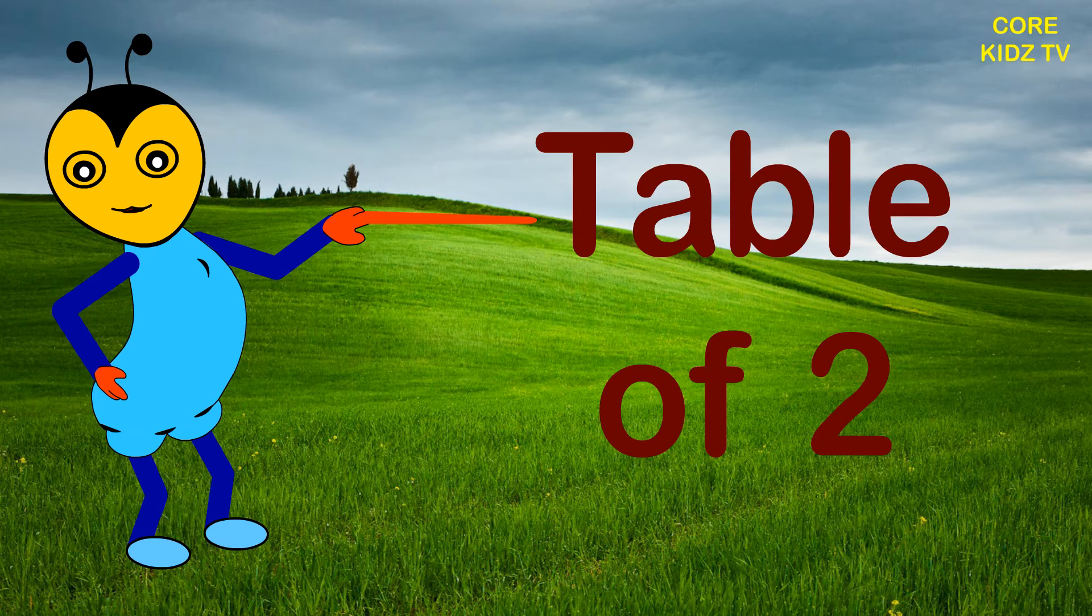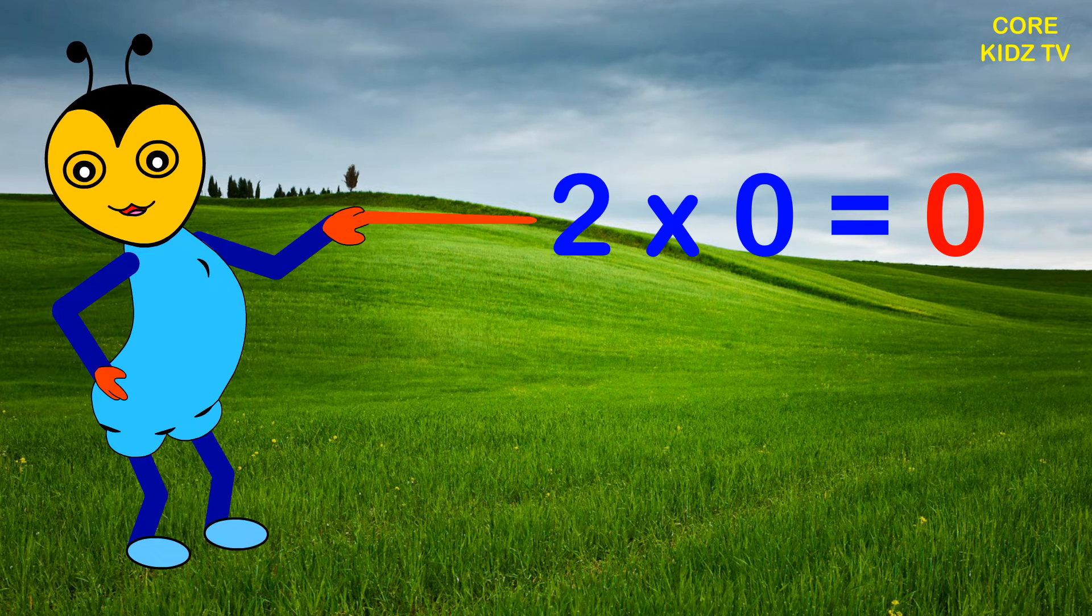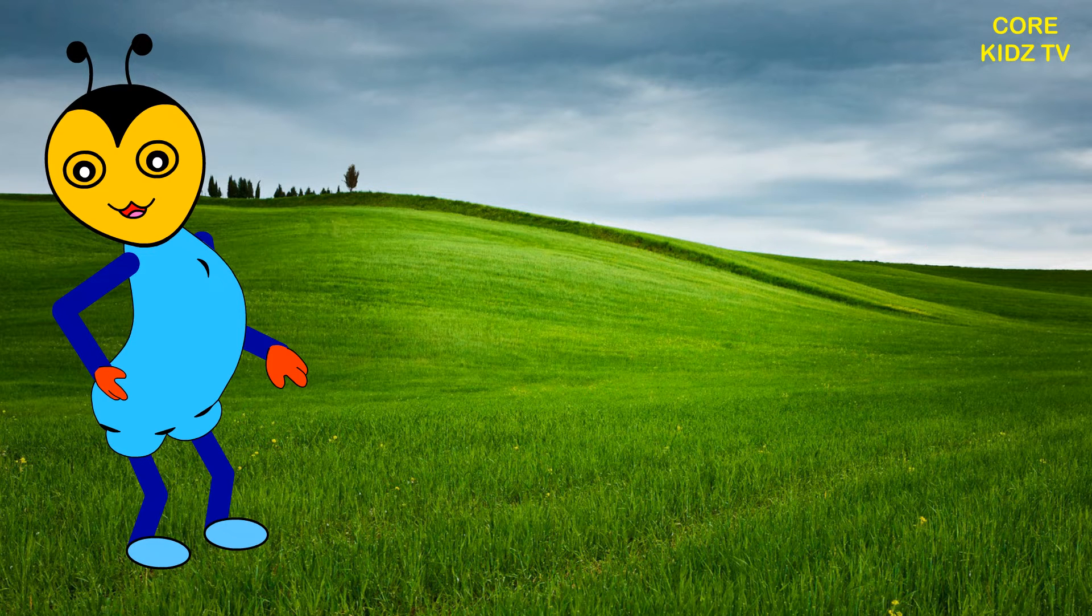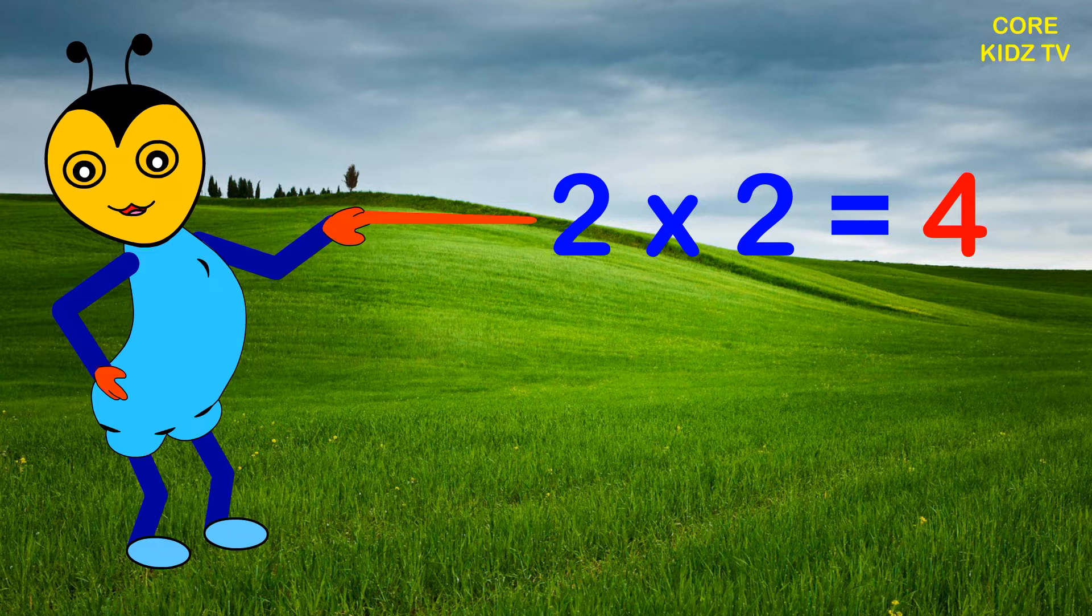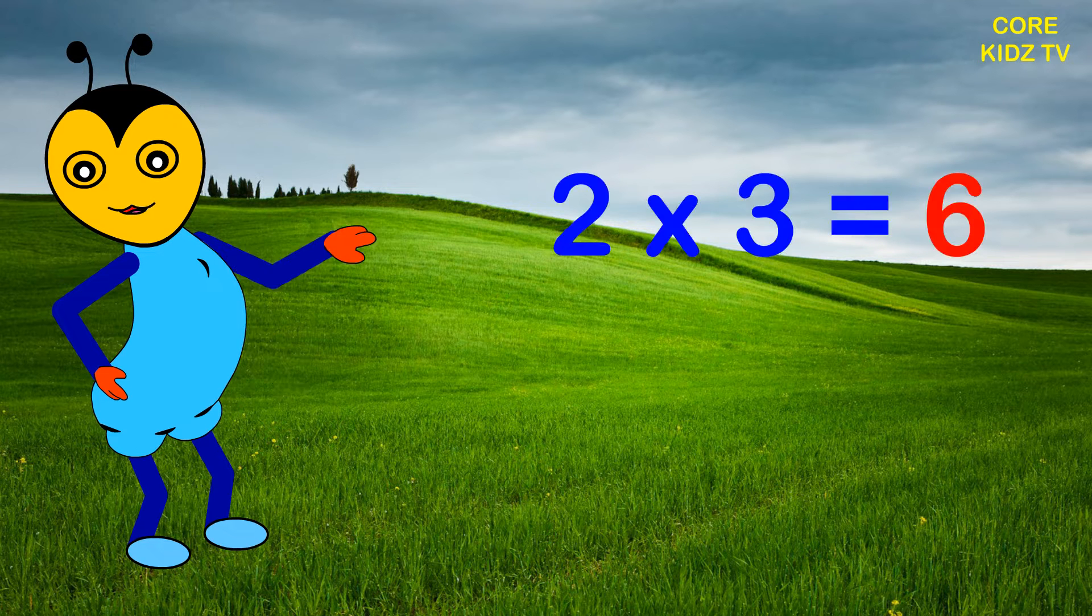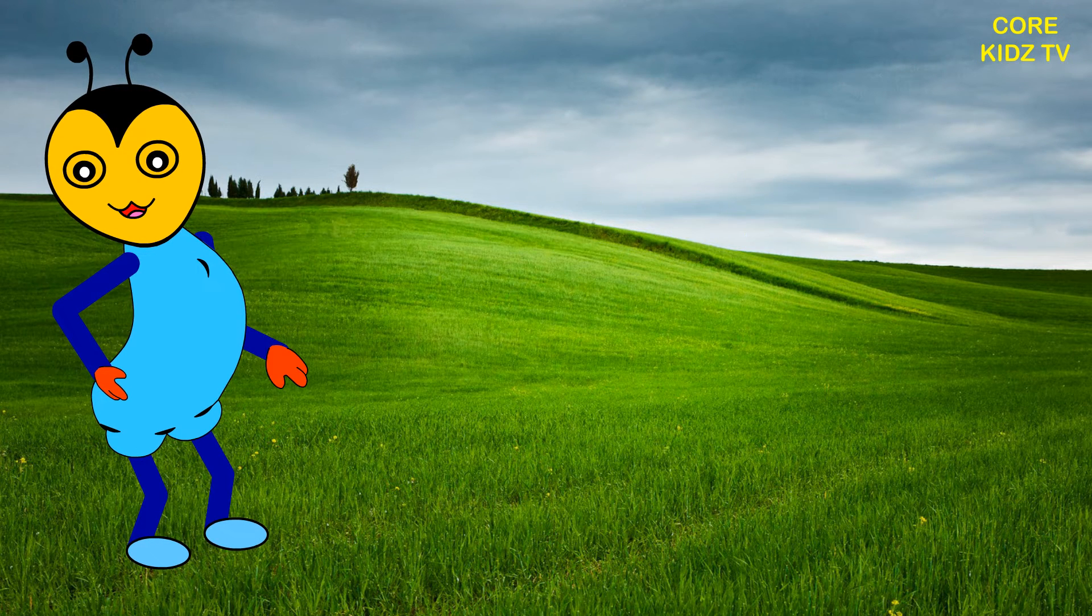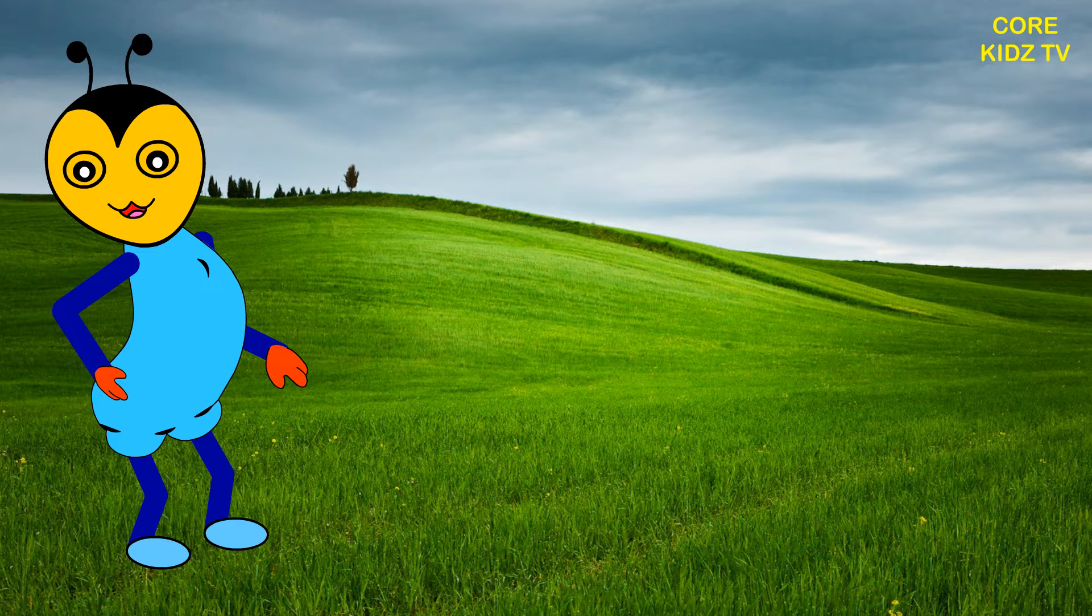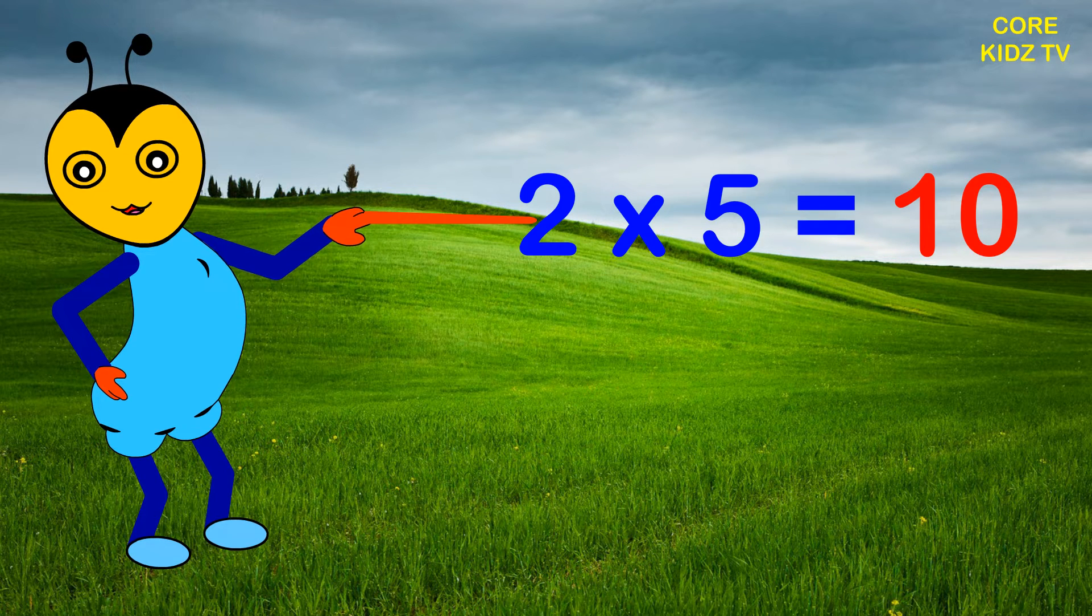Table of two. Two zeros are zero, two ones are two, two twos are four, two threes are six, two fours are eight, two fives are ten.